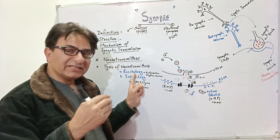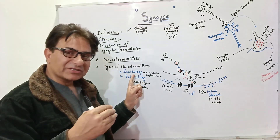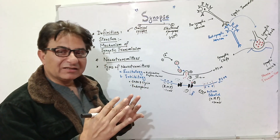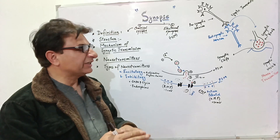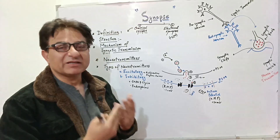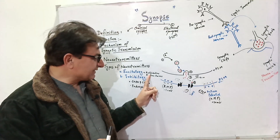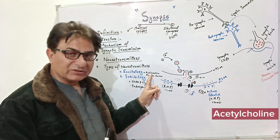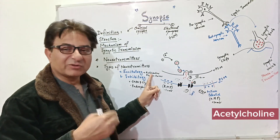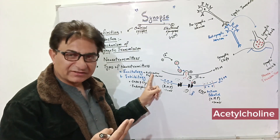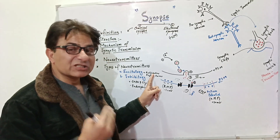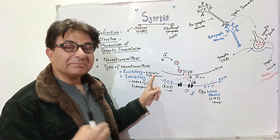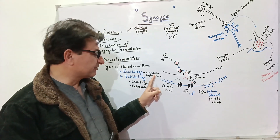Excitatory neurotransmitters carry the information through the post-synaptic membrane and cause the post-synaptic membrane to become stimulated. For example, in the peripheral nervous system, acetylcholine is the neurotransmitter responsible for synaptic transmission.